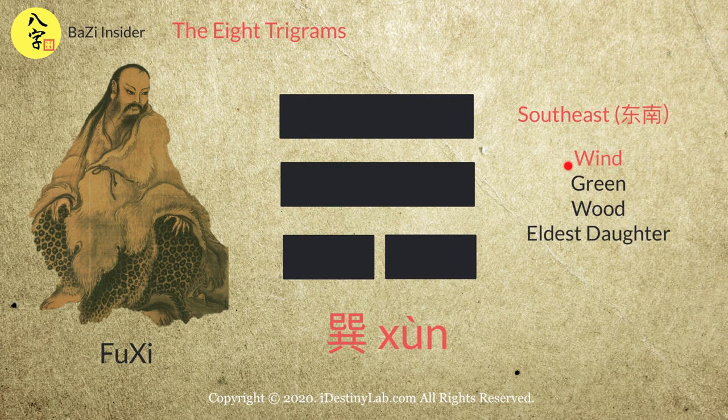The next Gua represents the south-east direction. It also represents the wind, green colour, and the eldest daughter. Its 5 elements is wood.